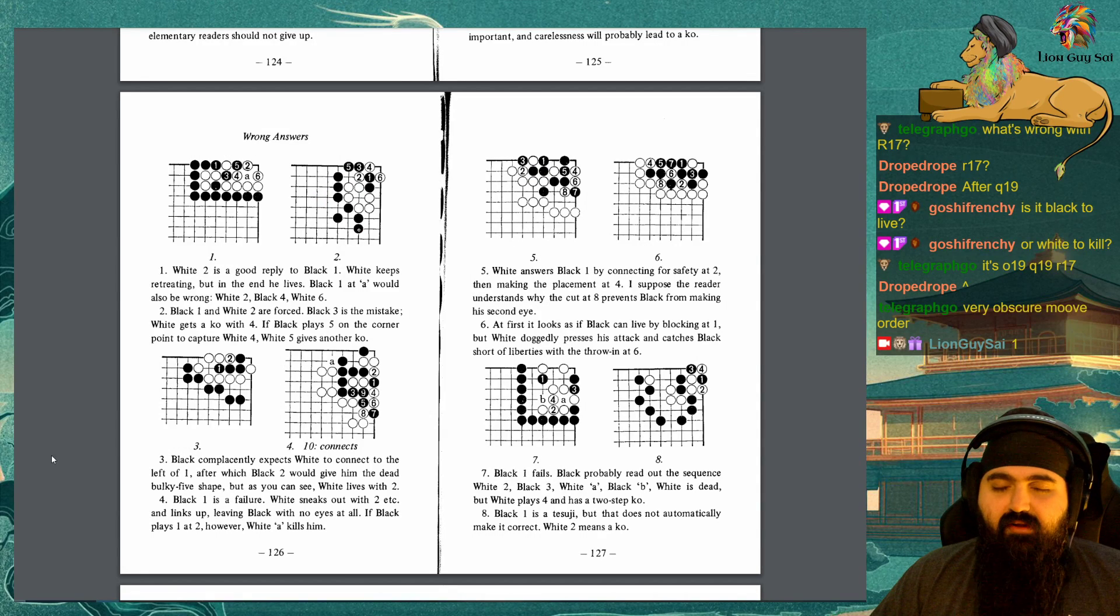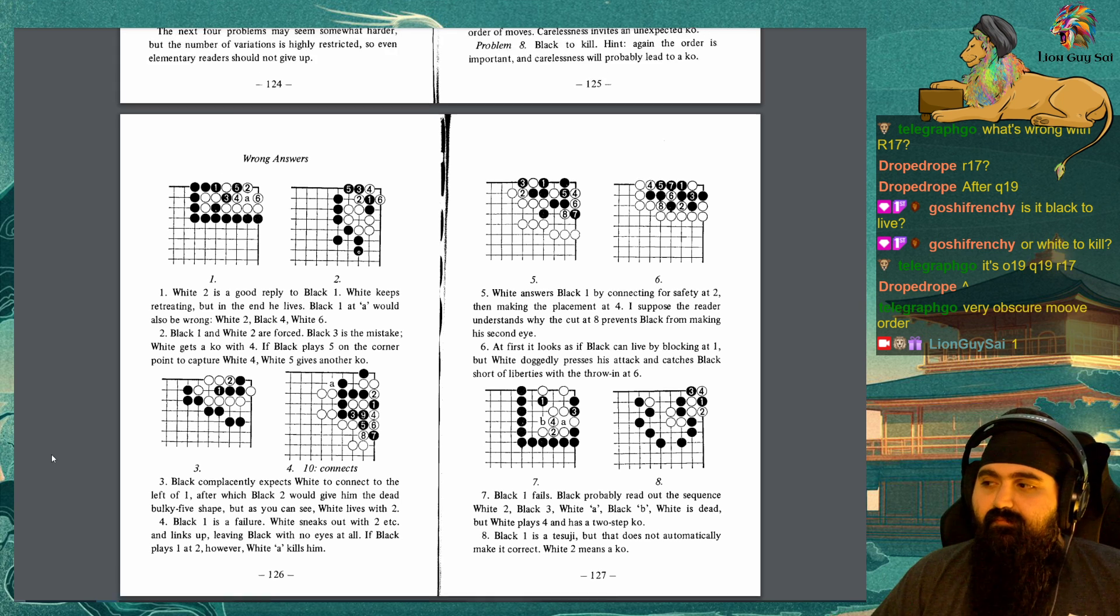Wrong answers. 1. White 2 is a good reply to Black 1. White keeps retreating, but in the end he lives. Black 1 and A would also be wrong. White 2, Black 4, White 6. Black 1 and White 2 are forced. Black 3 is the mistake. White gets co with 4. If Black plays 5 on the corner point to capture White 4, White 5 gives another co. 3. Black complacently expects White to connect to the left of 1, after which Black 2 would give him the dead bulky 5 shape. But as you can see, White just lives with 2. 4. Black 1 is a failure. White sneaks out with 2, etc. and links up, leaving Black with no eyes at all. If Black plays 1 at 2, however, White A kills him.